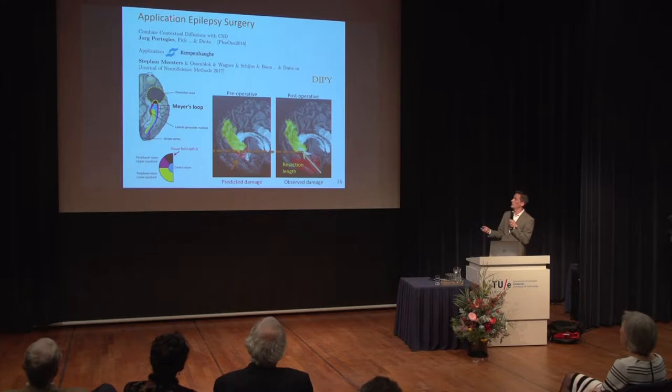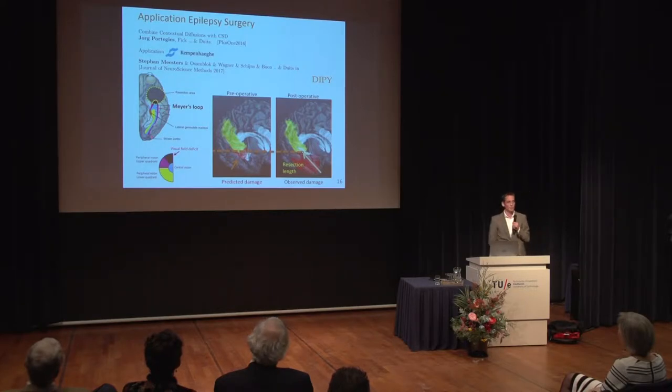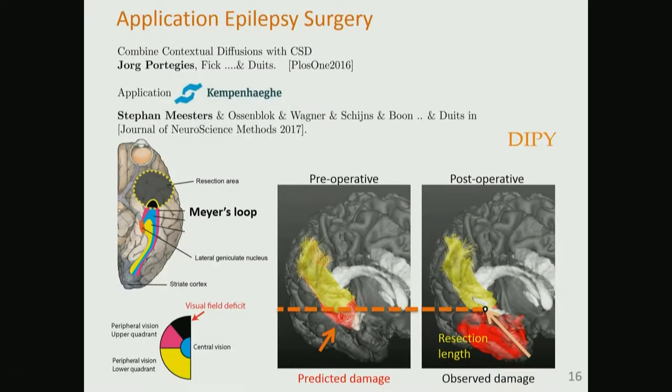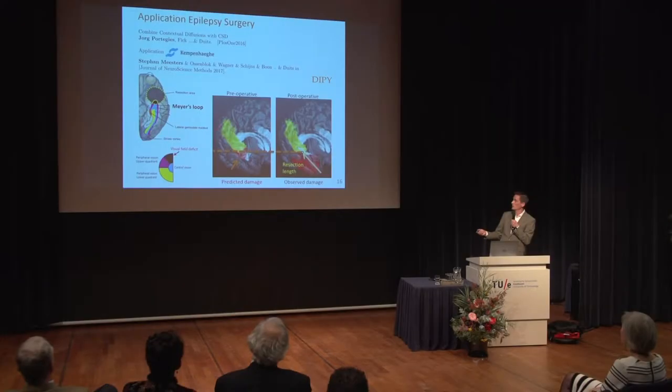In diffusion-weighted MRI images, you can identify structural connectivity between regions in the brain, which is very important for surgical planning. Here you see the optic radiation — the anatomical bundle responsible for the visual side of the patient. If a patient suffers severely from epilepsy, the surgeon has to cut a certain part of the brain, and it's of vital importance not to damage these optic radiation fibers. Thanks to our methods, we can compute these optic radiation fibers in a stable and reproducible manner, following a test-retest procedure, verified on pre- and post-operative data.